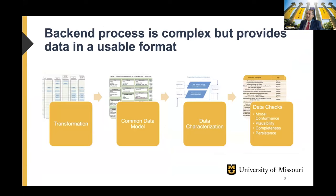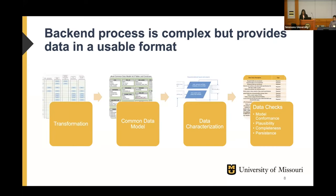Every site has to pass the data characterization and data check procedure, which occurs quarterly. This data characterization and quality check — the DCQ process — has evolved over time, and the number of data checks has increased. Every site has to be compatible with the process, pass, and get the site approved to be able to continue on the network and participate in real clinical research or any retrospective analysis of data.